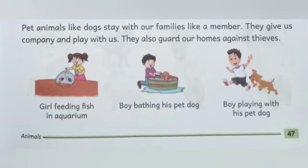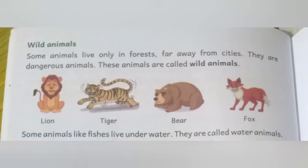Now let's move to page number 48: Wild animals. Some animals live only in forests far away from cities. They are dangerous animals and are called wild animals. Kuch animals forest mein rehte hain. Woh city se bohot door hote hain aur bohot dangerous bhi hote hain. They hunt for their food in forests. That is why they should not live in the city. For example, lion, tiger, bear, fox. These are called wild animals.